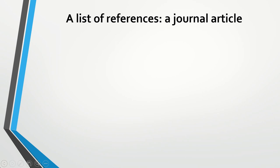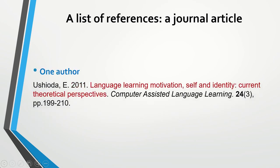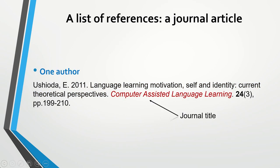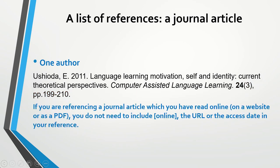If you would like to cite a journal article with one author, here is how you should do it. You should provide the author's surname and initial, then the year of publication, then the article title, then the journal title — which is in italic — then the volume and issue numbers and page numbers. If you are referencing a journal article you have read online, for example on a website or as a PDF, that's fine, but you don't need to include the link and the access date in your list of references.